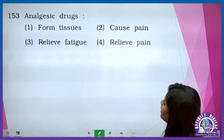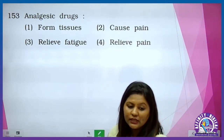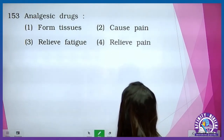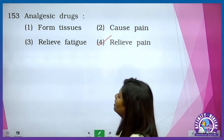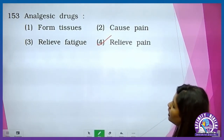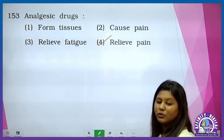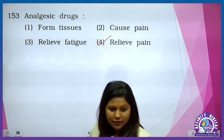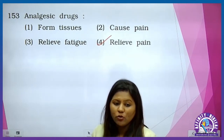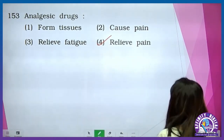Moving to the next one — analgesic drug. Bachcho analgesic jo hota hai, that is a painkiller. Jo ki pain ko relief dene ke liye use hota hai and it is answer number 4 — it relieves pain. Baqi jo hai: it forms tissue, causes pain, relief fatigue. Fatigue means tiredness. So wo pain ko relief karta hai. That is analgesic drugs.